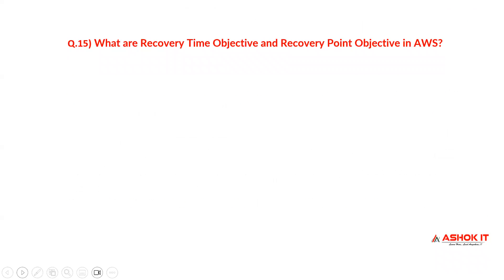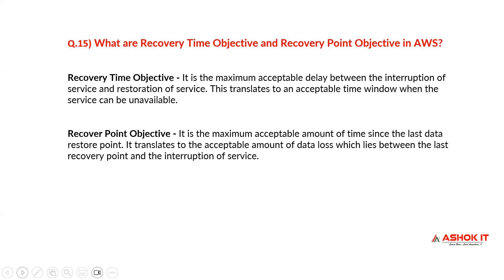What are Recovery Time Objective (RTO) and Recovery Point Objective (RPO), and what is the difference between them in AWS? Recovery Time Objective is the maximum acceptable delay between the interruption of service and the restoration of service — it translates to the acceptable time window during which the service can be unavailable. Recovery Point Objective is the maximum acceptable amount of time since the last data restore point — it translates to the acceptable amount of data loss between the last recovery point and the service interruption.